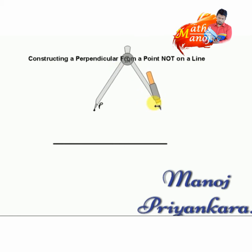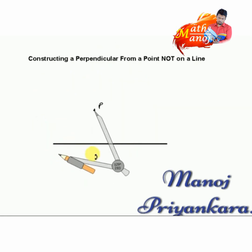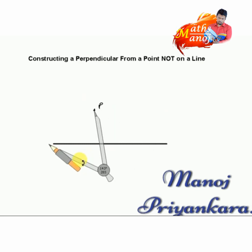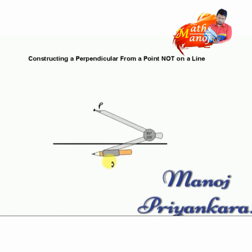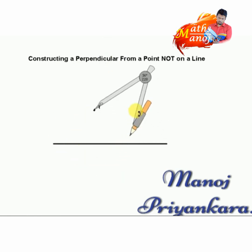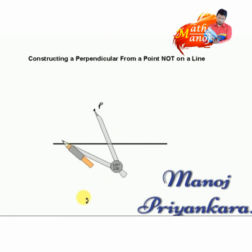Then we can adjust the compass. We check whether it is possible for us to draw arcs in order to cut the straight line in two places. If the length of the straight line is not enough, it doesn't matter — we can increase the length of the straight line. Now we can construct two arcs.